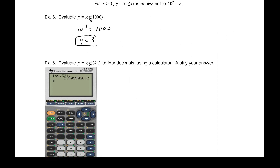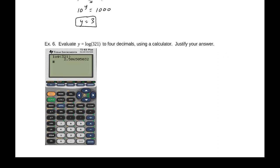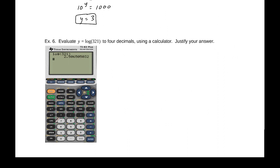Next is evaluate y equals log of 321 to 4 decimals using a calculator. So the log button is right here on a TI calculator. You just type log, parenthesis, 321, parenthesis, and there's our answer. y equals 2.5065. Now, to justify our answer, we can take 321 and put it between two powers of 10. This is bigger than 100, which is 10 squared, and less than 1,000, which is 10 cubed. It's between those two, meaning that the log is going to be between 2 and 3, 2.506.